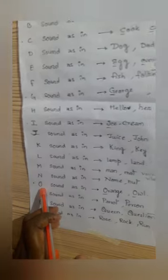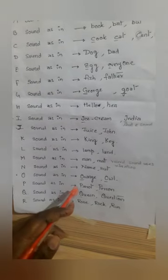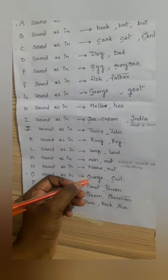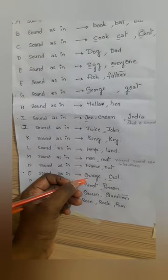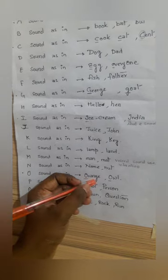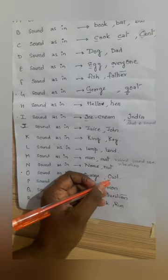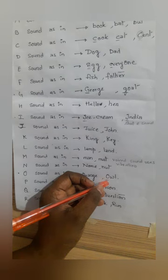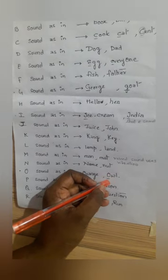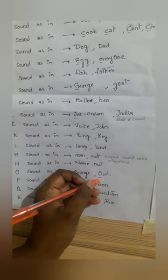Coming to O, it again has two sounds. Here in orange, we use the sound of 'ah'. It's not 'o', it's 'ah' — orange. But coming to O, W, L — we will say it as owl.